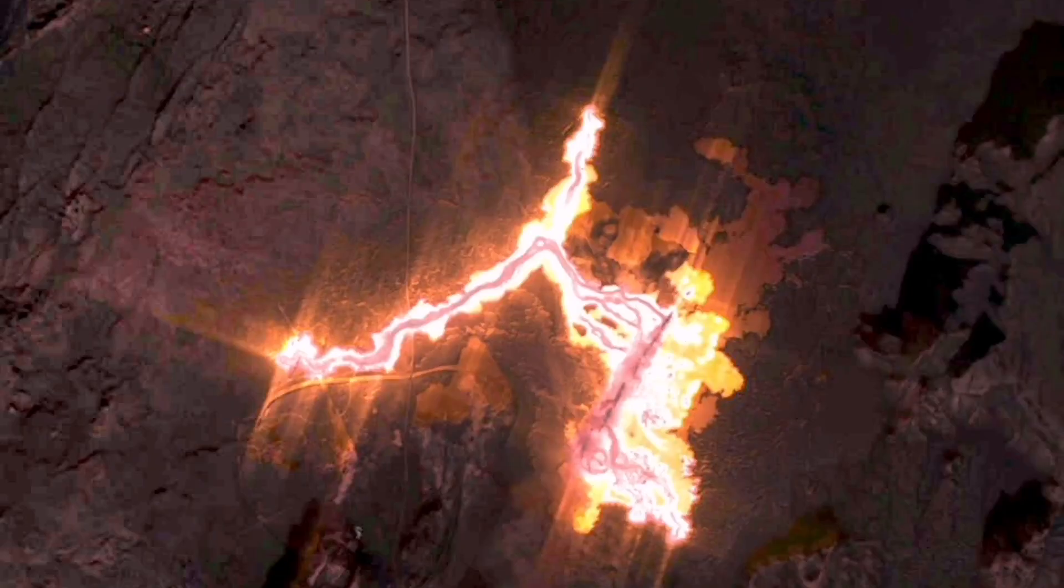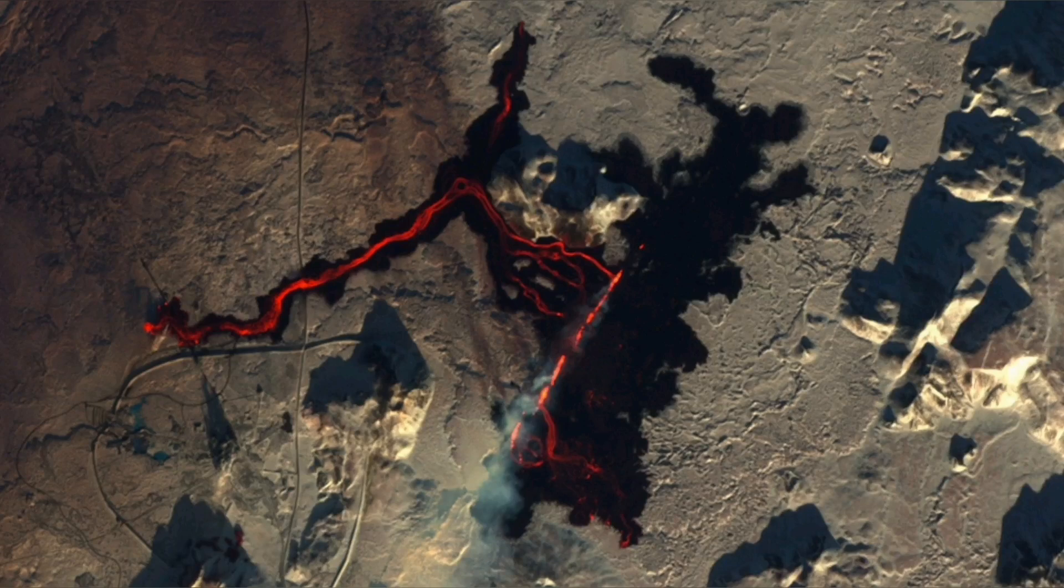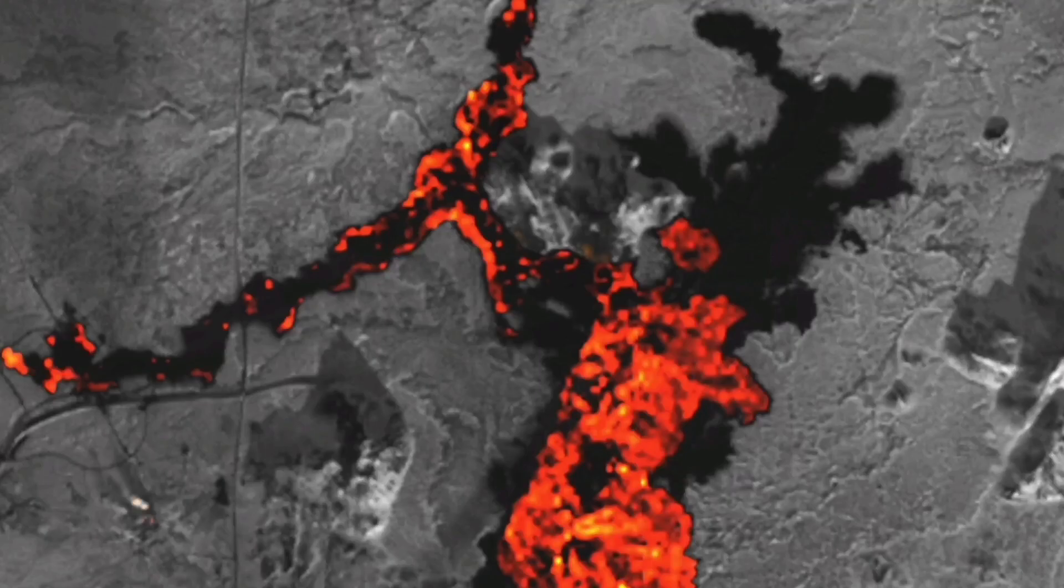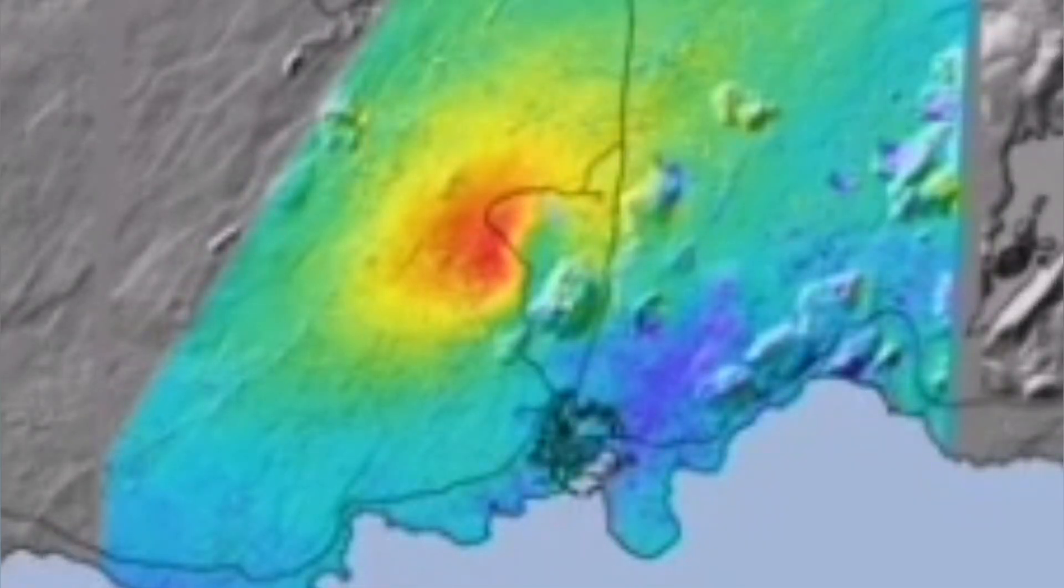And we had it here near the Svartsengi geothermal power plant, near the old Sundhnúkar craters. A tongue of lava went around and encircled following the contour of the ground under the Svartsengi.